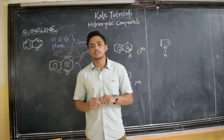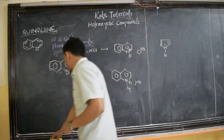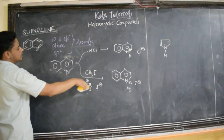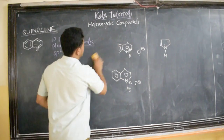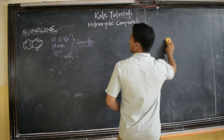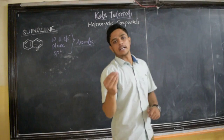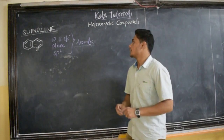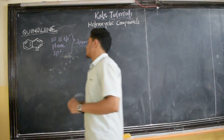In exams, they may ask anything about this, so you should be ready to answer. It is about its basicity. I have explained the structure: it will be planar, all are sp2-hybridized, and it is planar. According to Hückel's rule, that is the 4n+2 rule, the total pi electrons it has got is 10. This is about its structure.